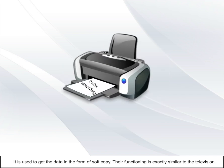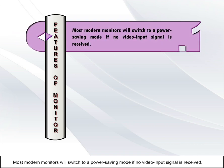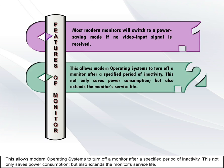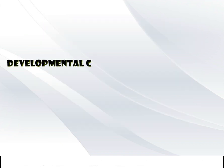It is used to get data in the form of soft copy, and its functioning is exactly similar to the television. Most modern monitors will switch to a power saving mode if no video input signal is received, allowing operating systems to turn off the monitor after a specified period of inactivity. This not only saves power consumption but also extends the monitor's service life. Monitors with the highest resolution are often used in the graphic arts and film industries.